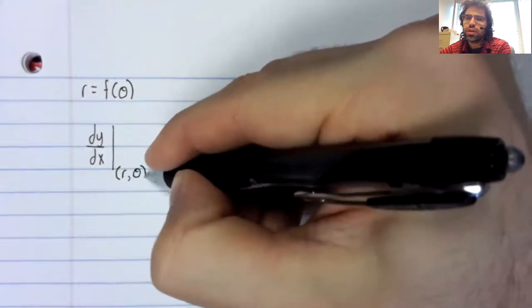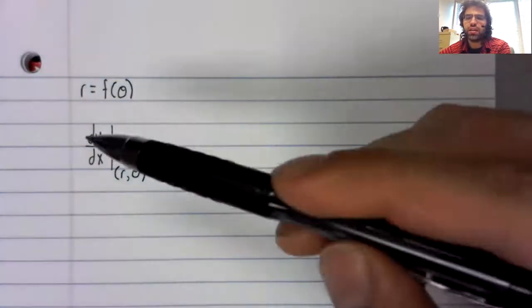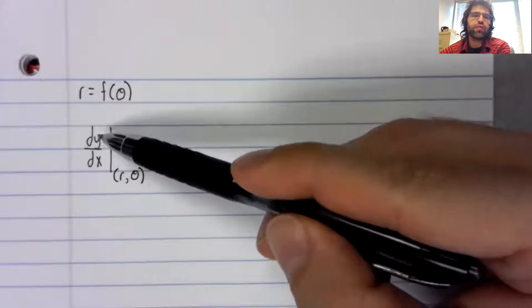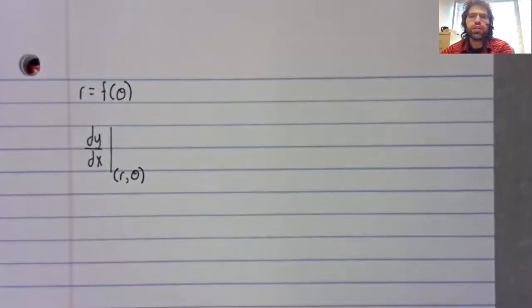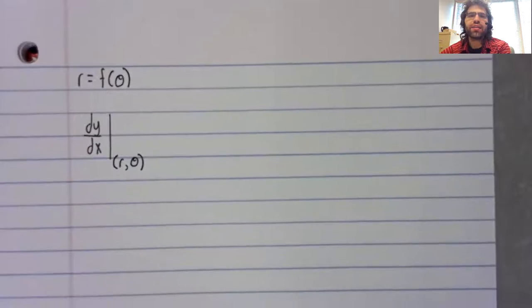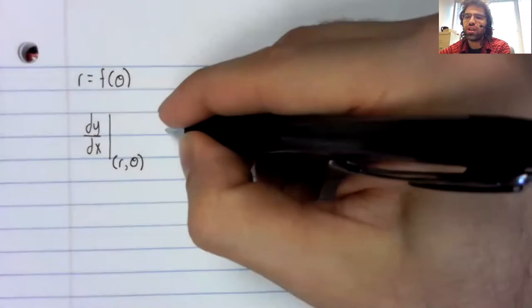And our equation, even though we're finding the derivative of y with respect to x, is not going to have y and x in it. It's going to be entirely in terms of theta.